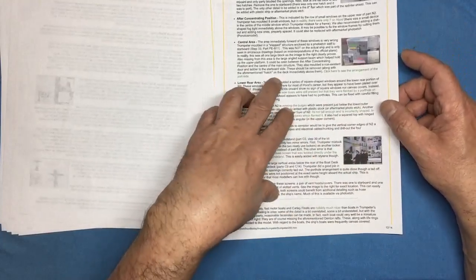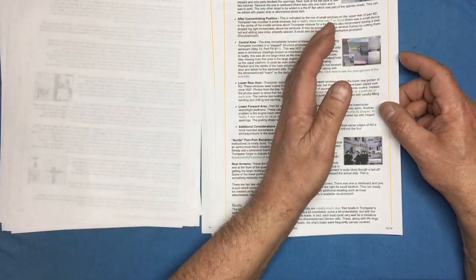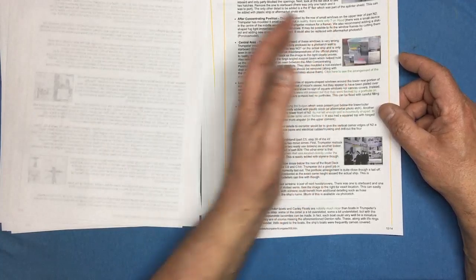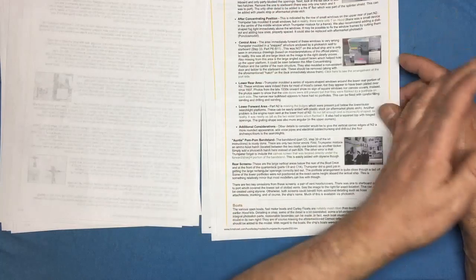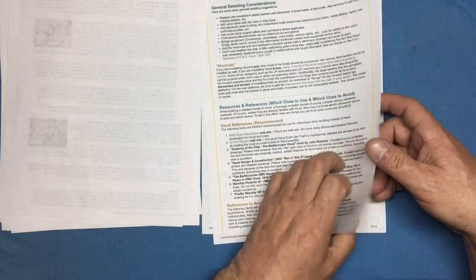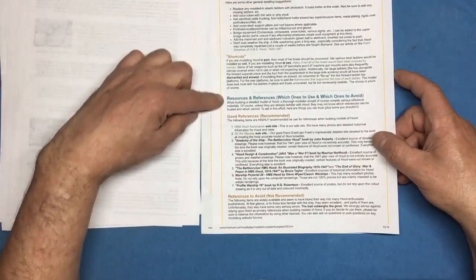Another one I've learned from this. With Bismarck you've got A B C D for the main turrets, Anton and so on. But basically this is A B X Y. So interesting.